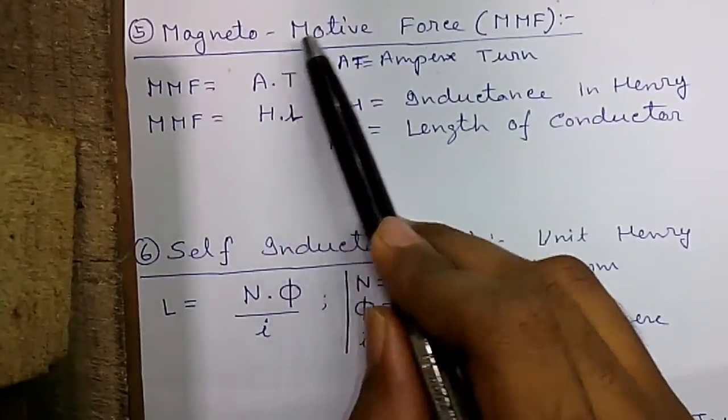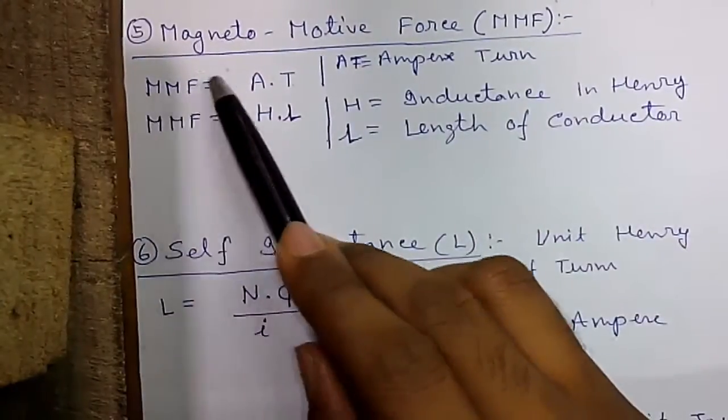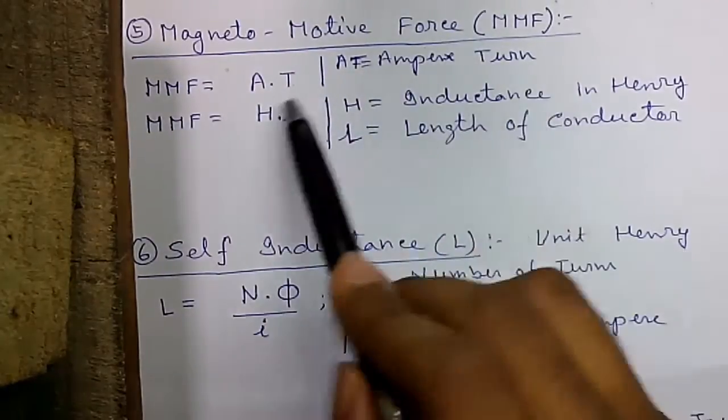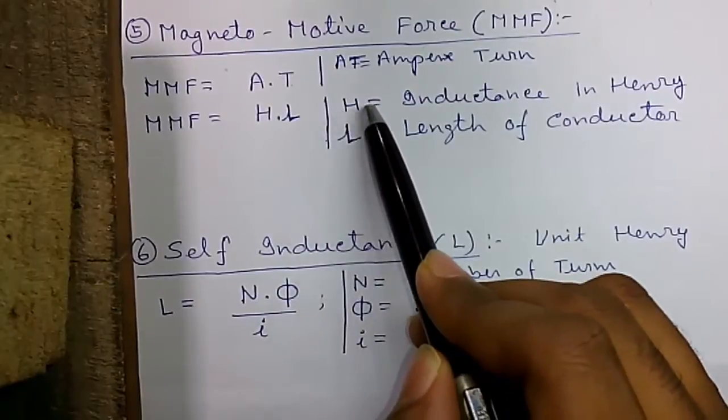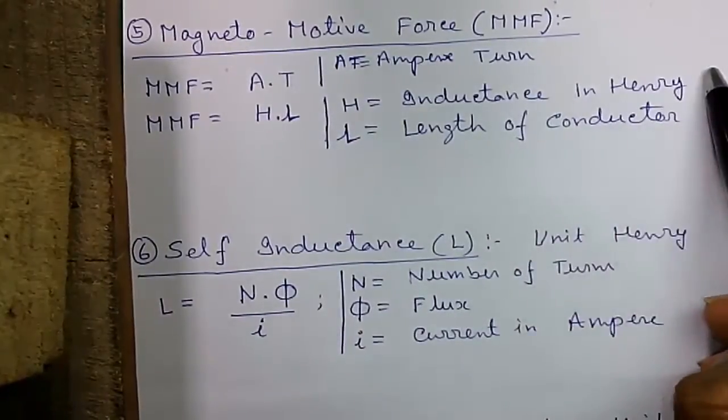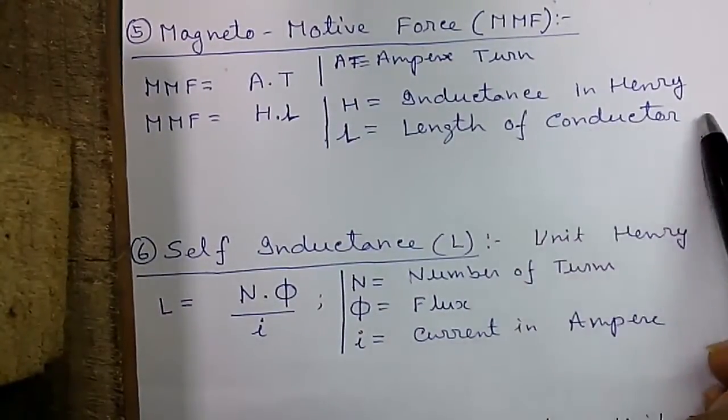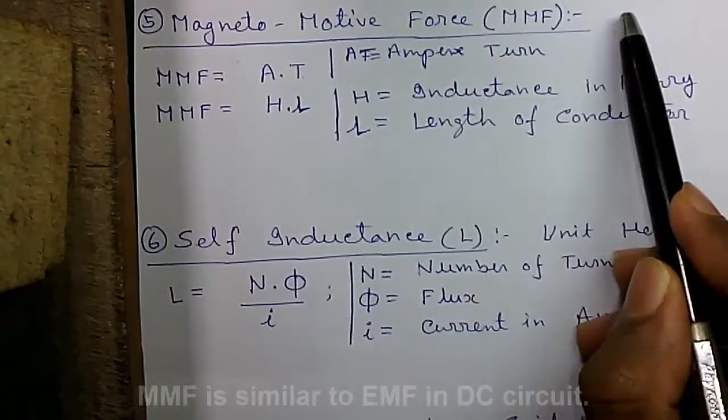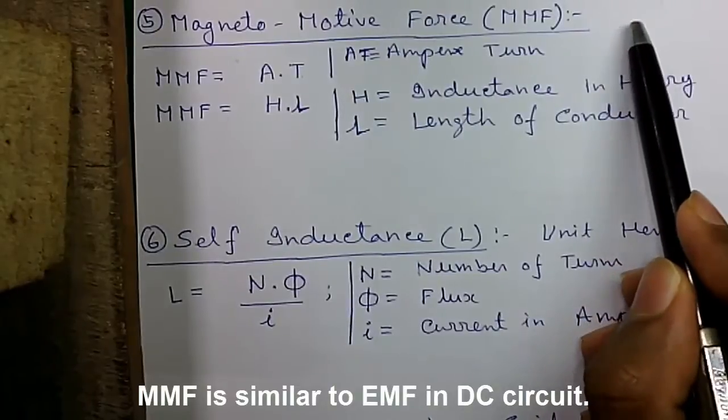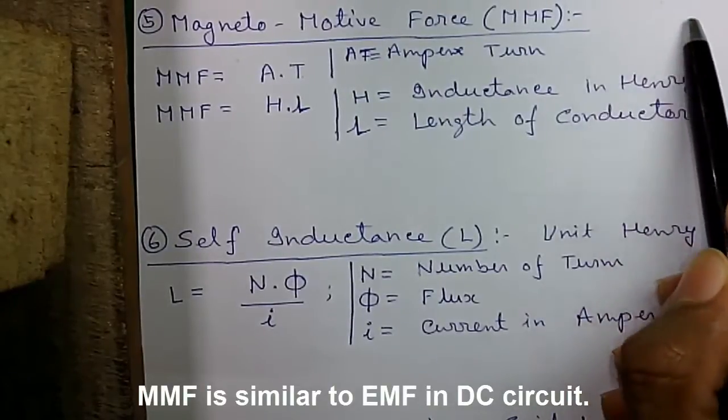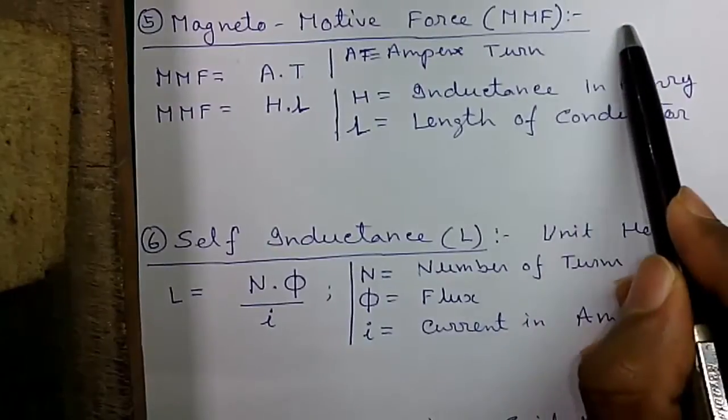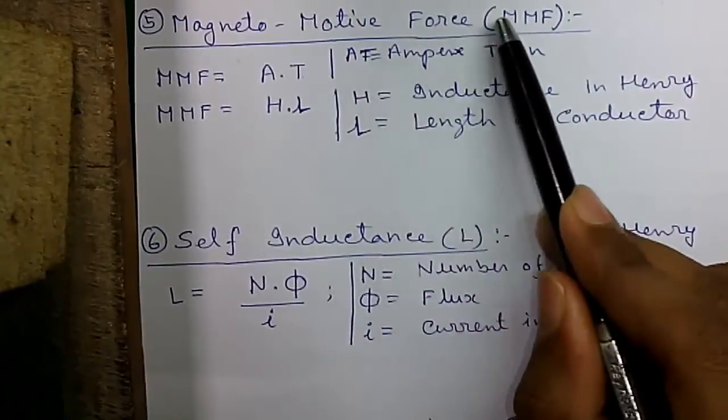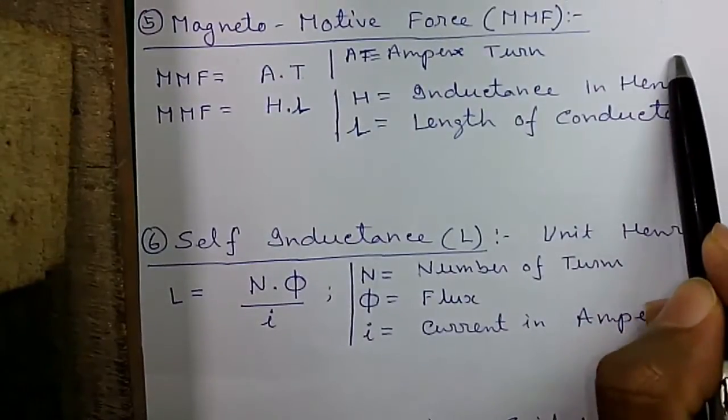Formula five, magnetomotive force or MMF. The MMF equals to AT or ampere turn and the formula is MMF equals to HL. H is the inductance in Henry and L is the length of conductor. In AC circuits and DC circuit, the force is measured by EMF or electromotive force which is the force which drives current through the circuit. And in magnetic circuit, the equivalent is magnetomotive force or MMF which drives the flux through the circuit.